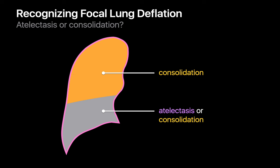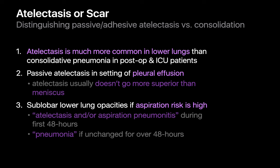There are three tips for lower lung opacities. One: statistically, in post-op and ICU patients, most lower lung opacities will be atelectasis, not consolidation. Two: in patients with a pleural effusion, passive atelectasis usually doesn't go higher than the pleural meniscus — if it does, seriously consider consolidation. Three: in patients with high aspiration risk, lower lung opacities under 48 hours old may be labeled 'atelectasis and/or aspiration pneumonitis,' while opacities unchanged for over 48 hours suggest consolidation or pneumonia.